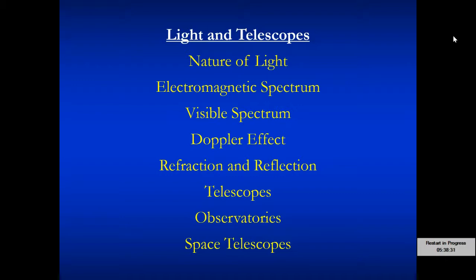As we move forward, we'll look at refraction and reflection and those principles and how we use those to build telescopes. We'll look at some observatories here on Earth and some of these space telescopes, the observatories in orbit. So here we go. Let's begin with the nature of light.